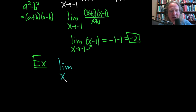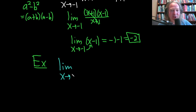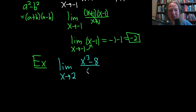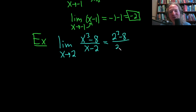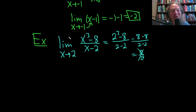Let's try the limit as x approaches 2 of x cubed minus 8 over x minus 2. If we plug in 2, we get 2 cubed minus 8 over 2 minus 2, which gives 8 minus 8 over zero — zero over zero, and the world ends. It doesn't work, so we have to do something else. That something else is, of course, factoring — specifically, the difference of cubes formula.